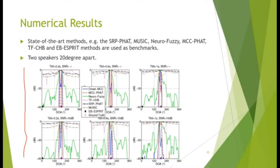This figure shows the case when there are two speakers. We can see that the TF-CHB and the EB-ESPRIT do not produce correct estimates, meaning that they do not have sufficient spatial resolution even at low reverb and high SNR. However, our proposed onset MCC and MCC-FET methods can produce the correct peaks even at high reverb and lower SNR.